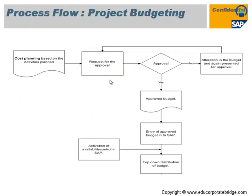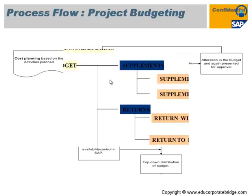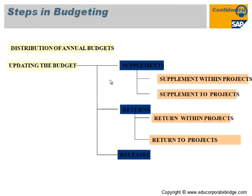The process flow for project budgeting starts with cost planning, followed by requesting approvals. Once approvals are received, the approved budget is entered in the SAP system, then distributed to lower-level WBS elements. Budget distribution can be done top-to-bottom or bottom-to-top depending on business process requirements. Finally, the budget is released across the project.